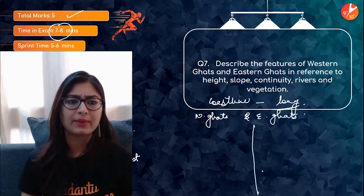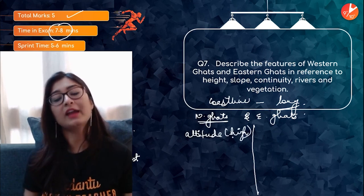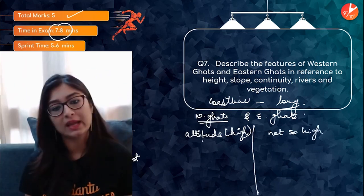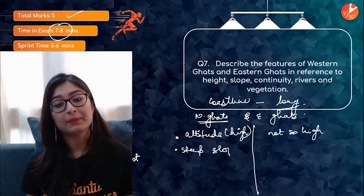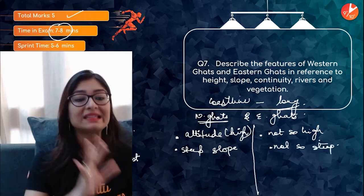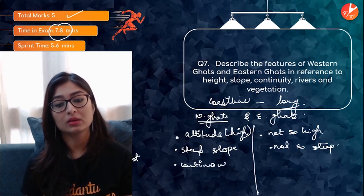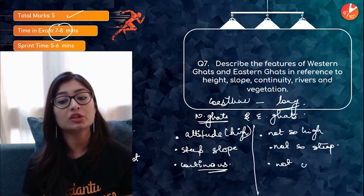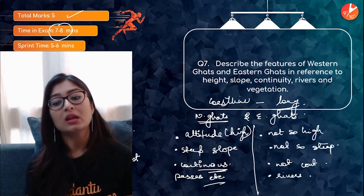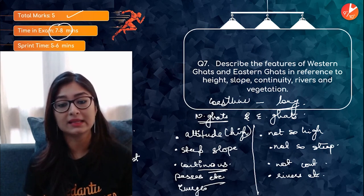In Western Ghats you can see more altitude variation — they are higher in height — whereas Eastern Ghats are not as high. Western Ghats also have steep slopes, while Eastern Ghats have gentler, less steep slopes. Western Ghats are continuous, but Eastern Ghats are not — they are disrupted and discontinuous. Regarding vegetation, Western Ghats have evergreen forests while Eastern Ghats have scrub vegetation.